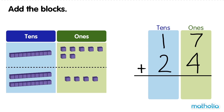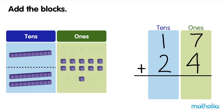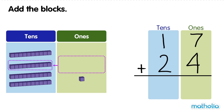Start by adding the 1s. 7 ones plus 4 ones equals 11 ones. We can regroup the 11 ones into 1 ten and 1 one. We write the 1 in the ones column and the 1 ten in the tens column.